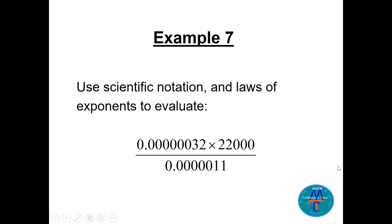Now let's take some nice questions. We have three numbers together and need to use scientific notation along with the laws of exponents — that's why lectures five and six are combined. The question is: 0.000032 times 22,000 divided by 0.000011. Give the final answer in scientific notation. Please pause the video and try it.